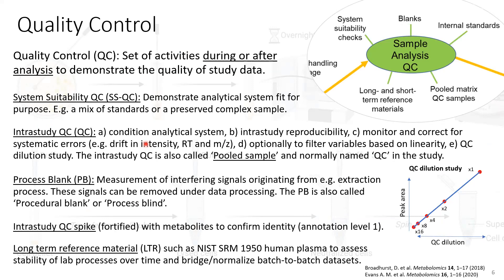Quality control is something we do during or after the analysis. One of the things is the suitability test, which demonstrates if the platform is good enough. What we typically do in our lab is have a standard spiked into a matrix with at least 50 different components — metabolites or pharmaceuticals. We run that on the platform and check if the retention times are good enough, the mass accuracy is good enough, and the intensity of the metabolites. If it fits and it's good enough, then the platform is ready to use.